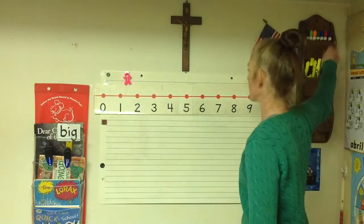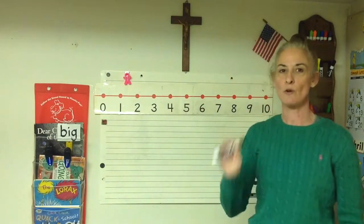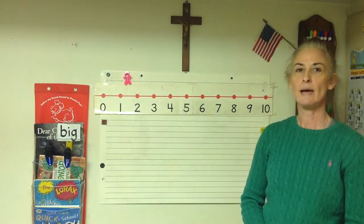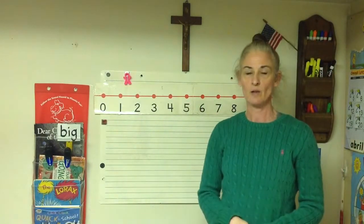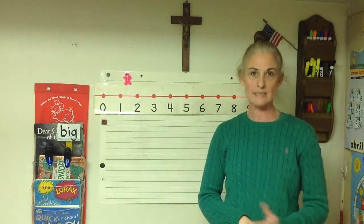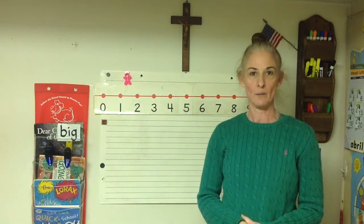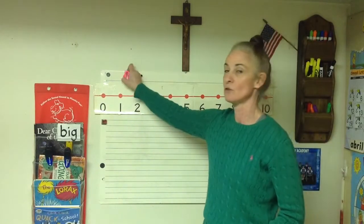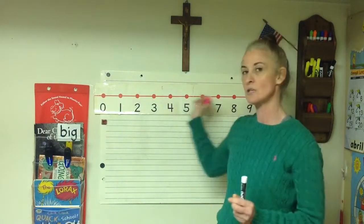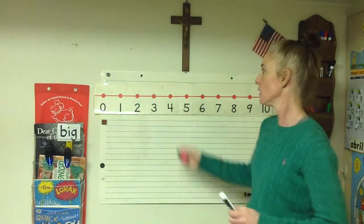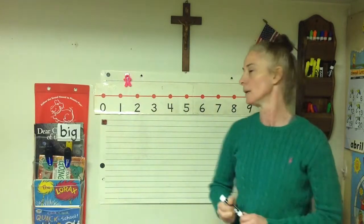So you should have your number line, your dry erase marker, and your writing strip that you can write and erase on. We'll do some practice together, then you'll practice on your own. You also need your little manipulative or a little character that you can slide on the number line. I'll write the first sentence and you will copy it.